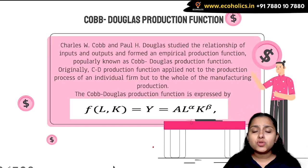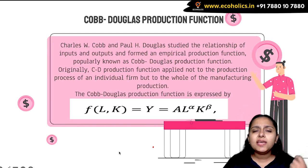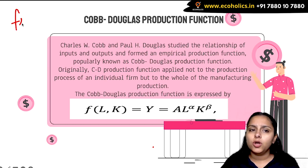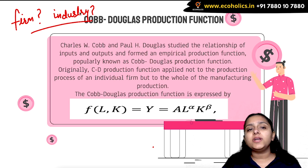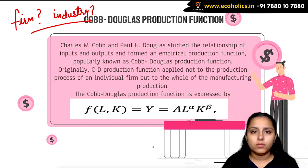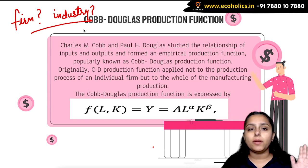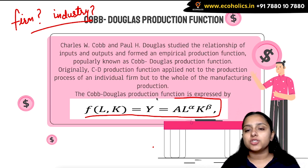As soon as the Cobb-Douglas production function comes to mind, the next question is: is it going to be the production function for a firm or for the industry? The Cobb-Douglas production function fits well for both the firm as well as the industry. So it's not the case that you can apply it only for a firm or only for an industry.